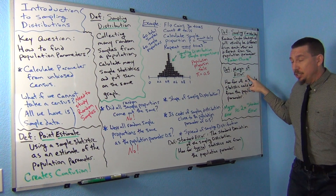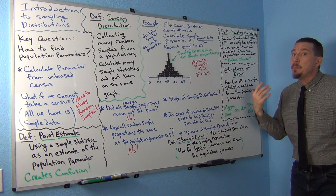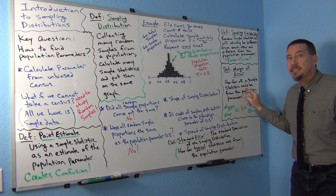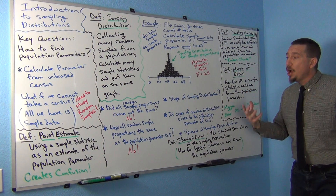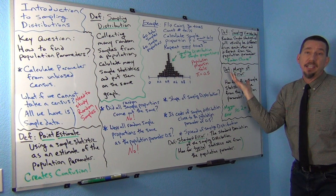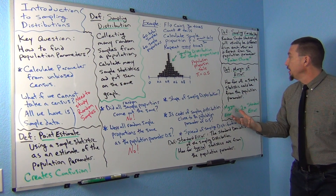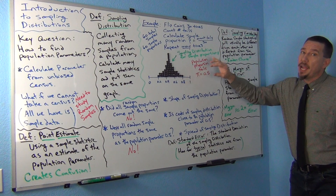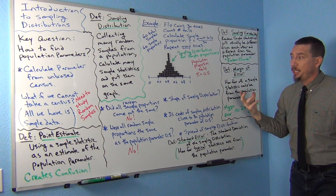This brings us to another definition: margin of error. All random samples usually have a margin of error — that is, how far off we think a sample statistic could be from the population parameter. How far off could our sample proportions be from the population proportion 0.5? That's called a margin of error. One of the key principles you learn from this graph is that random samples tend to be very different and tend to be off from the population.